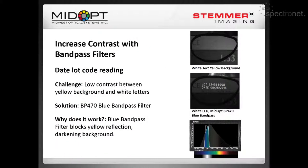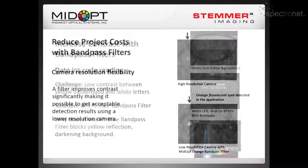Now I'm going to get into a few applications with bandpass filters. Here we're trying to inspect for a date lock code. Without a filter, obviously you can see there's no contrast — the background is yellow. By using a blue bandpass filter, we're blocking the yellow wavelengths and passing the date lock code. You can see we can maximize the contrast.